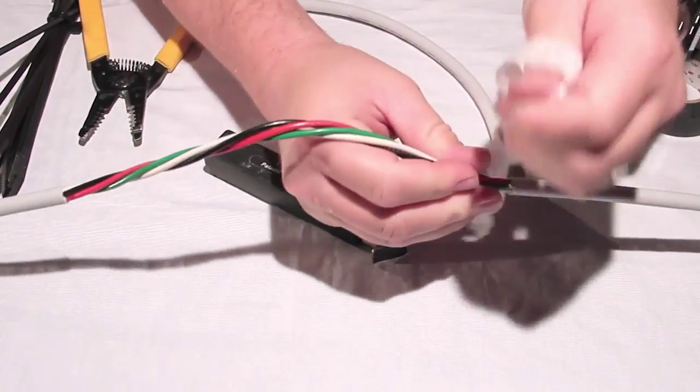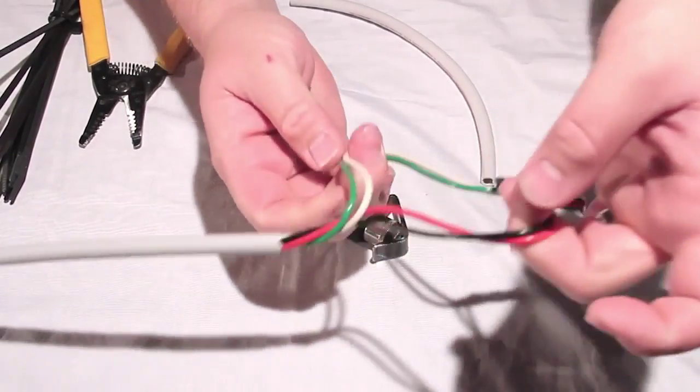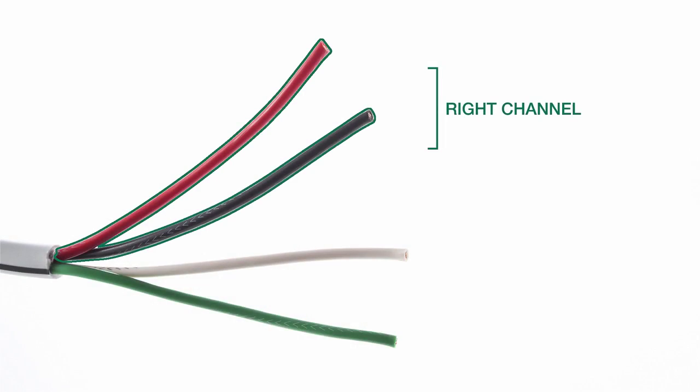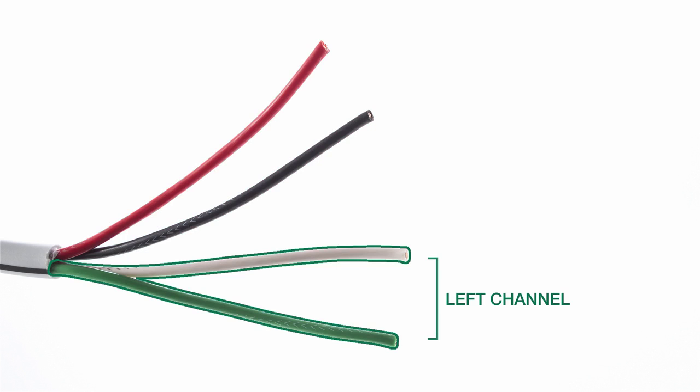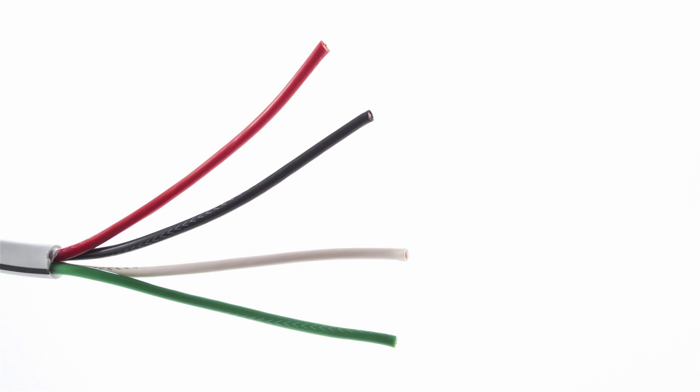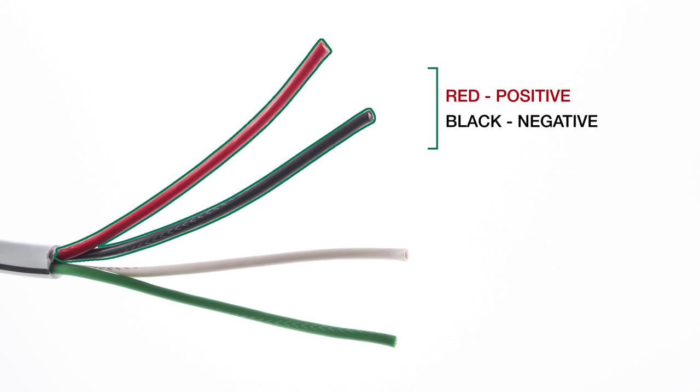Remove the jacket and the paper to expose the conductors and separate the wires. With the wires exposed, use the red and black for the right channel and white and green for the left channel. In this example, we will connect this speaker to the right channel using red for positive and black for negative.